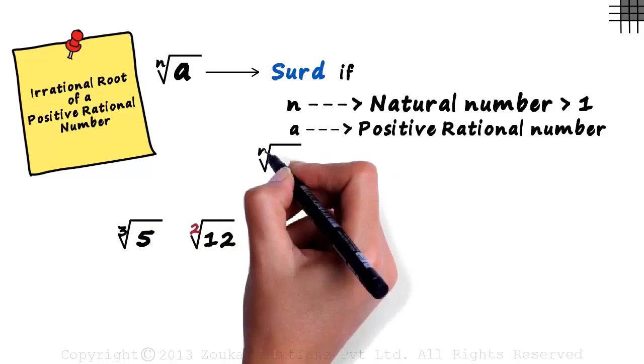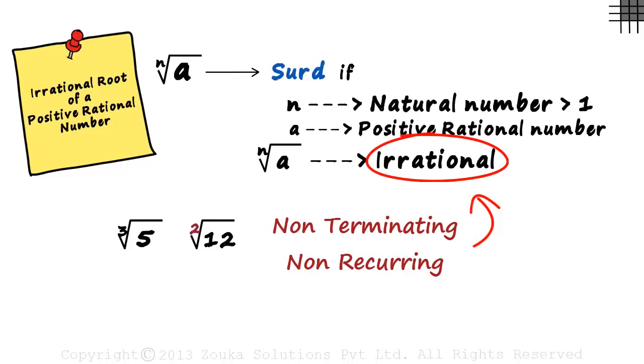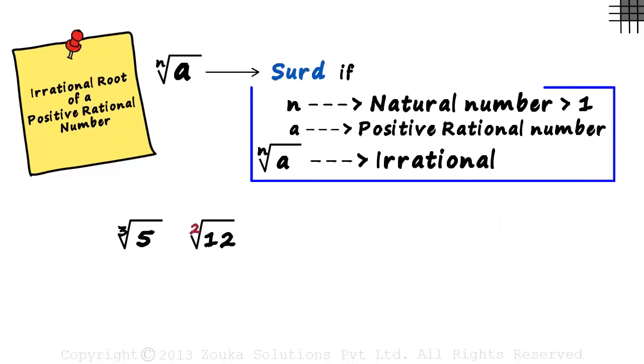And the result of nth root of a should be irrational. If we calculate the values of these two numbers, we will see that they are non-terminating and non-recurring which makes them irrational. So these are the three important conditions that make the number a SIRD.